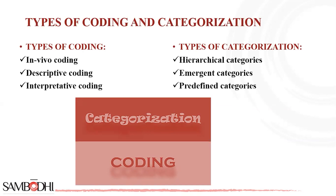The characteristics of emergent categories include: an inductive approach, where researchers let the data speak for itself without imposing preconceived notions or theoretical frameworks; the discovery of novel themes, where emergent categories often represent aspects not previously considered in the research question; reflexivity, where researchers continuously reflect on their own biases to avoid inadvertently influencing category emergence; and an iterative process, where researchers revisit the data, refine the codes and update categories as new insights emerge.